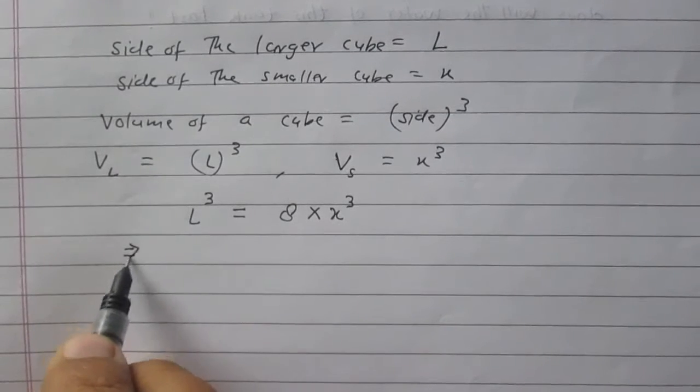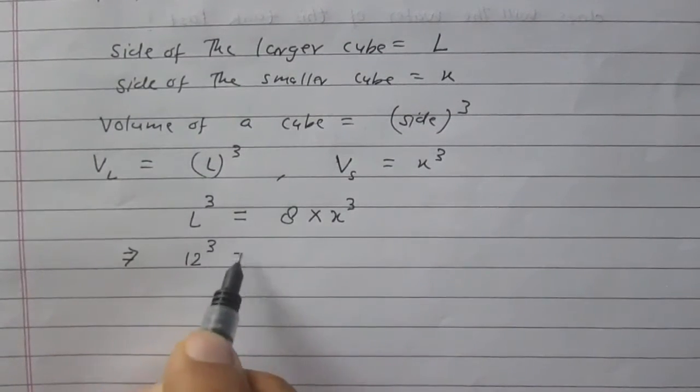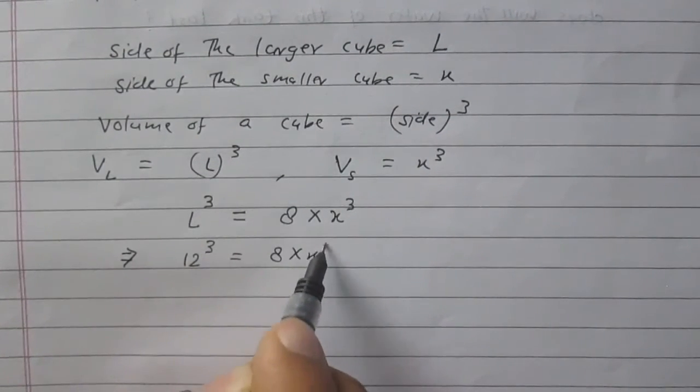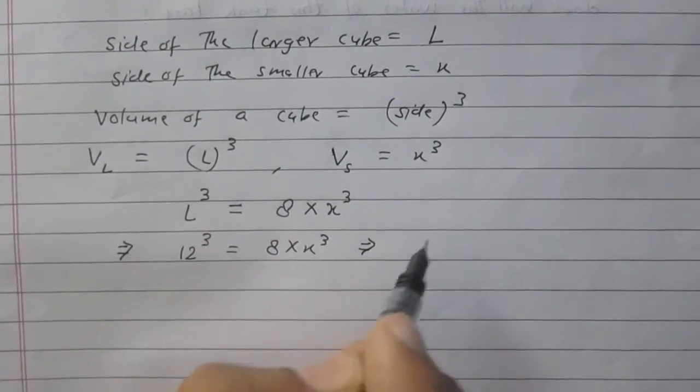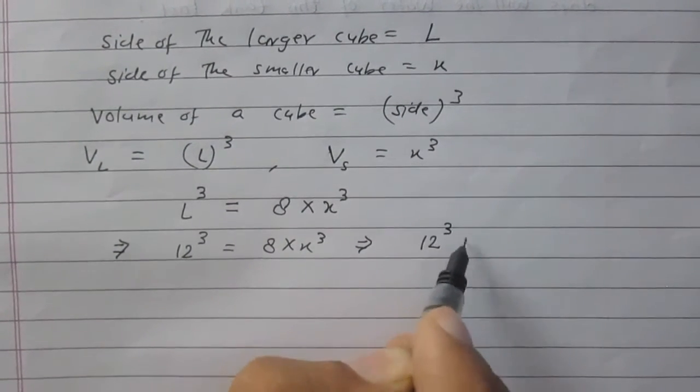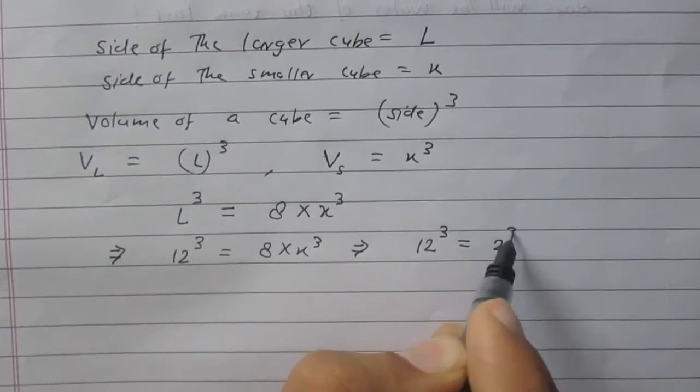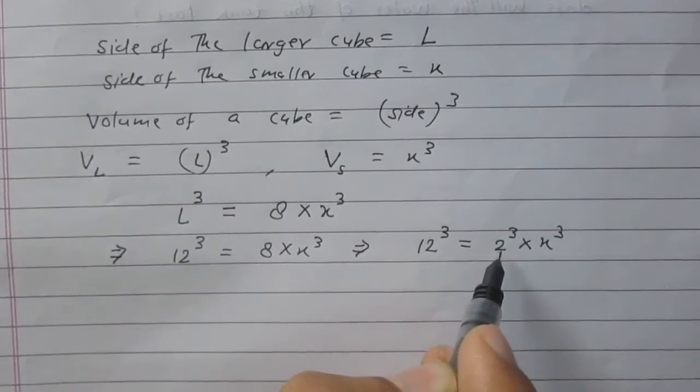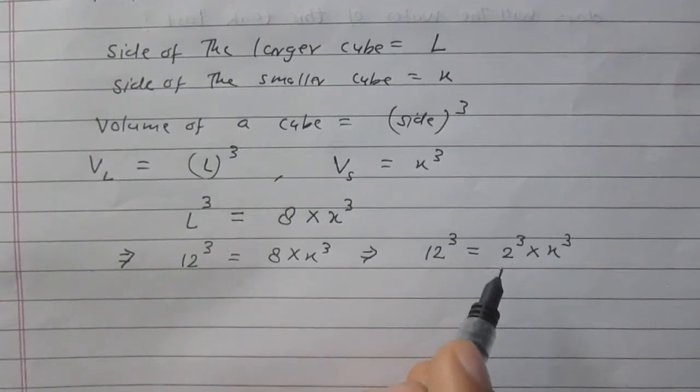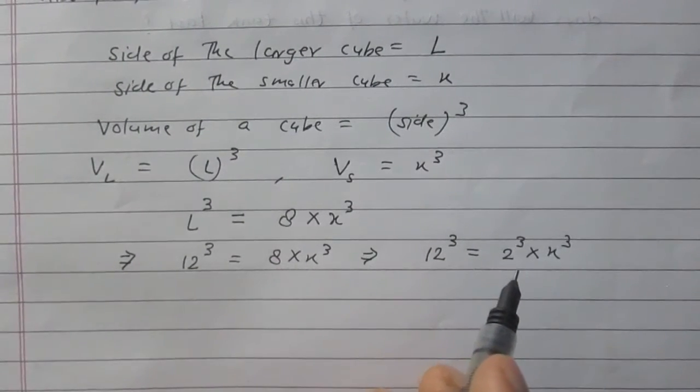We can substitute the values. It is 12 cube is equal to 8 into X cube. This relation can be written as 12 cube is equal to 2 cube multiplied by X cube. Why 2 cube? Because 8 is nothing but 2 multiplied by 2 multiplied by 2.